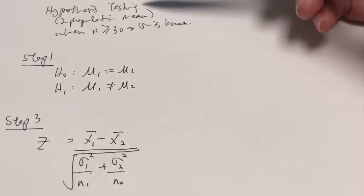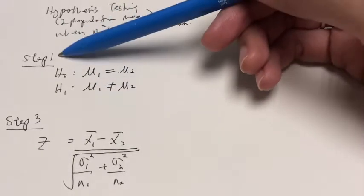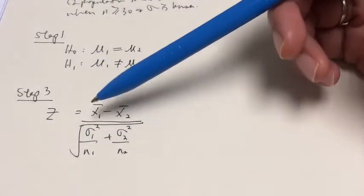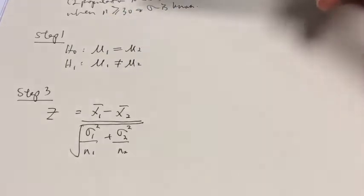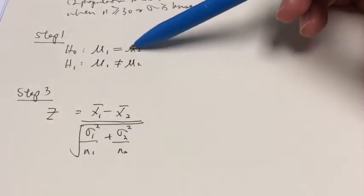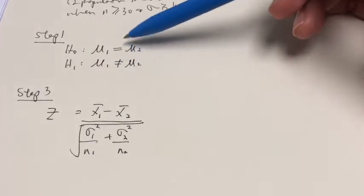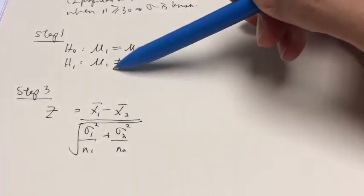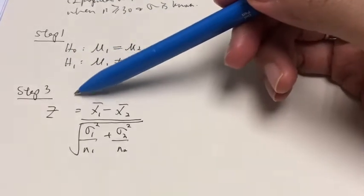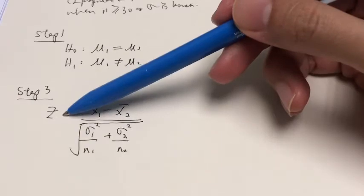So this is what we did for hypothesis testing on two population means when the sample sizes are large and both population standard deviations are known. We follow the same six steps, but there are differences when we write the hypothesis in step 1 as well as how to calculate the test statistic in step 3. This is how we write the hypothesis for a two-population mean test. The null hypothesis assumes both population means are equal, as opposed to the alternate, which is not equal to — or it can be one is greater than the other or lesser. It depends on the context. And for step 3, which is finding the test statistic, we use Z because both sample sizes are large and we know sigma.